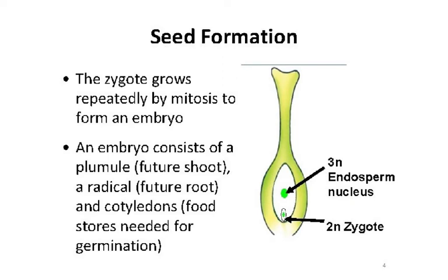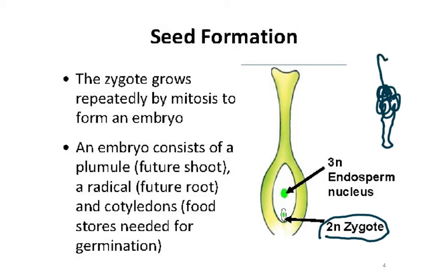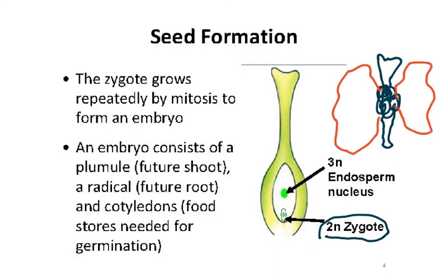Post-fertilization, the zygote grows repeatedly by mitosis to form an embryo. The zygote divides into a ball of cells which forms the embryo - some of it will develop into the radicle and some into the plumule, and then we will have the cotyledons. The original ovule's outer covering will then be called the testa or seed coat.